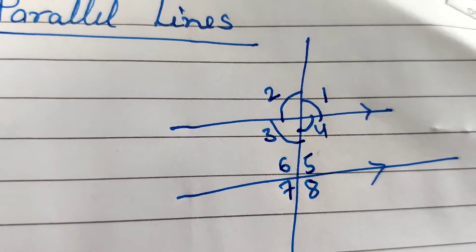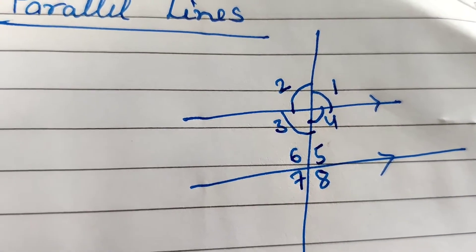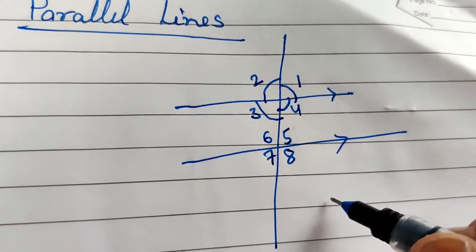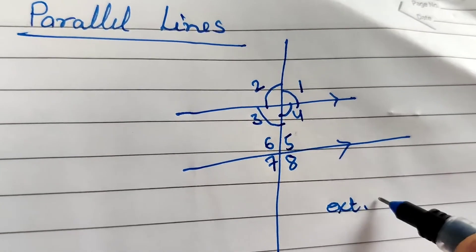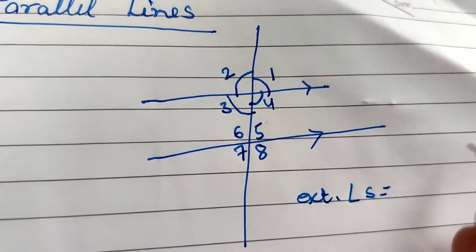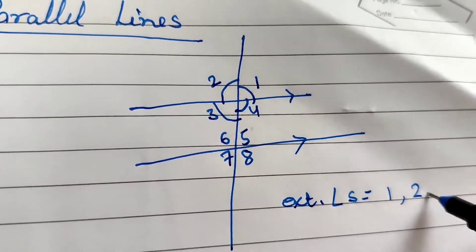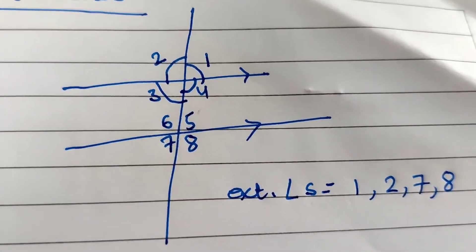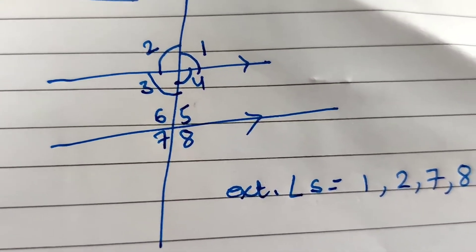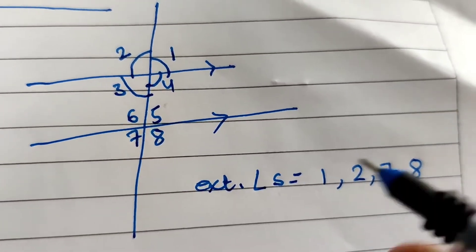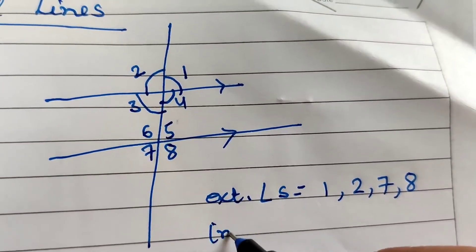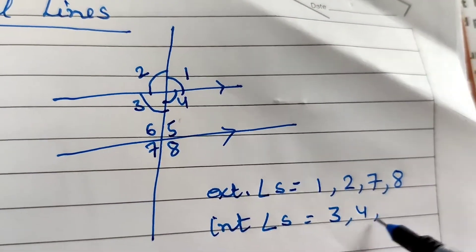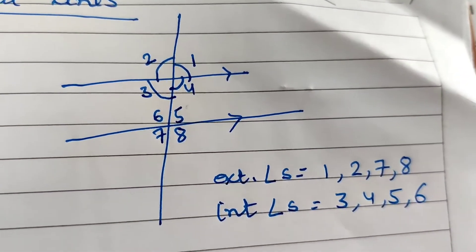Now we need to know what corresponding and alternate angles are. First, exterior and interior angles. Exterior angles are those above the parallel lines — angles 1, 2, 7, and 8. Interior angles are those between the two parallel lines — angles 3, 4, 5, and 6.